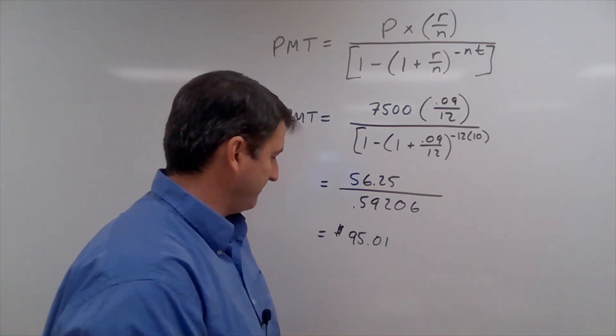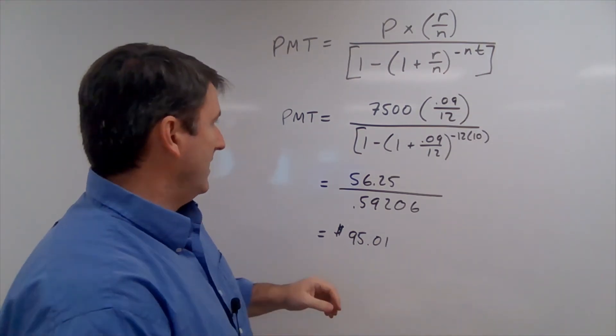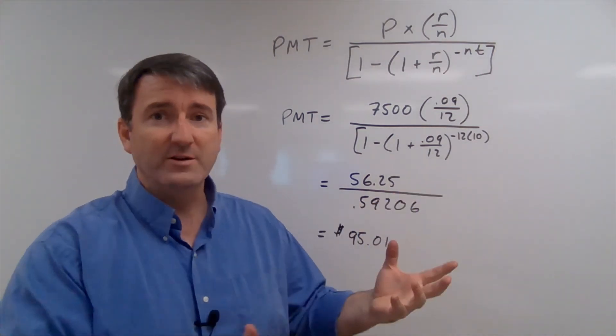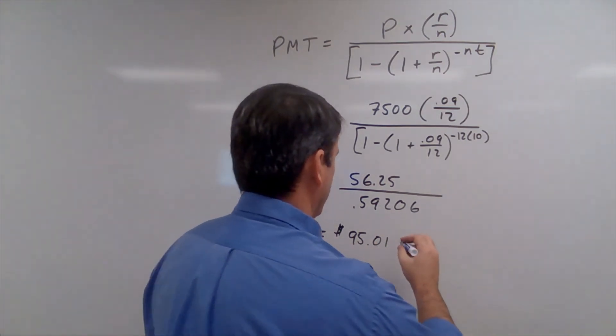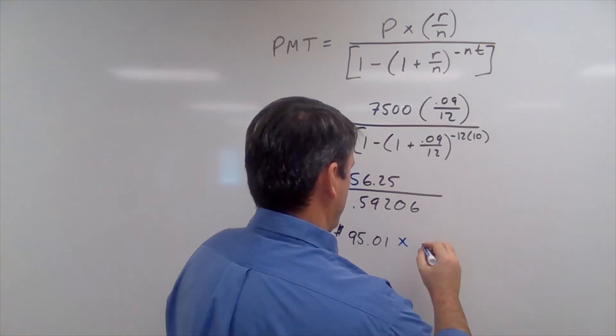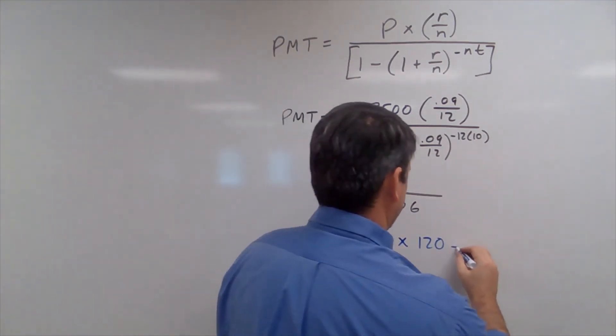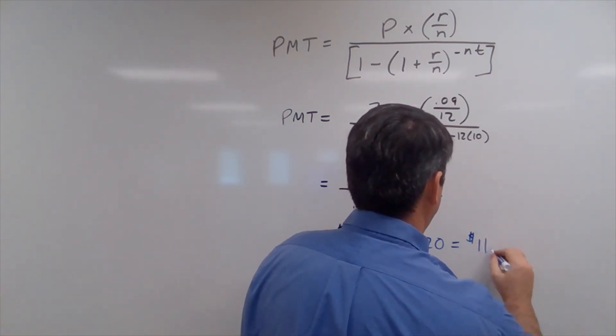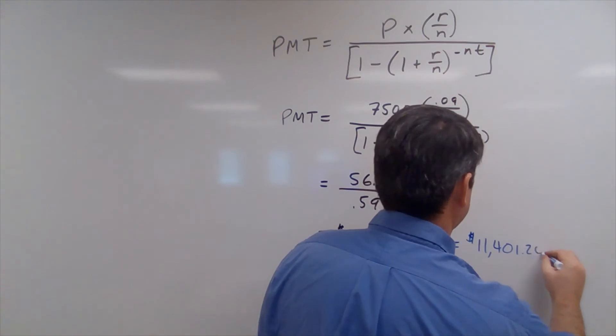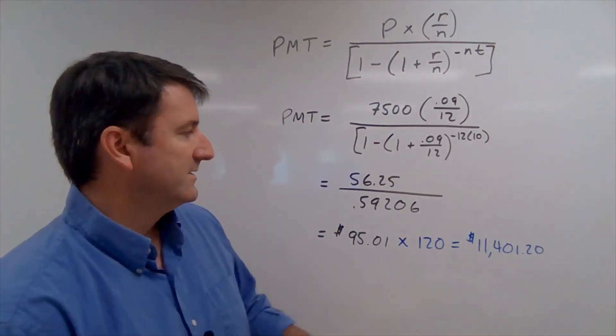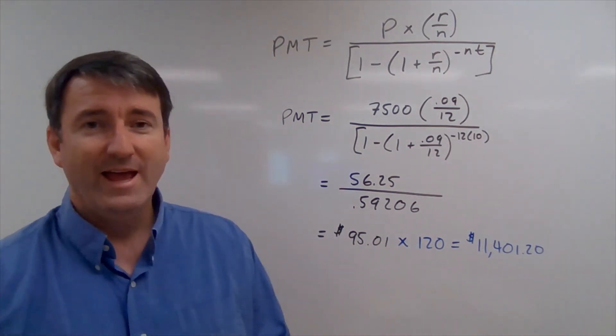Now, our next question was how much are we going to pay over the life of the loan? Well, we're going to be making 120 payments, 12 payments per year for 10 years. So we're going to multiply this by 120. And that's going to give us $11,401.20. So over the life of our loan, we're going to pay $11,401.20.